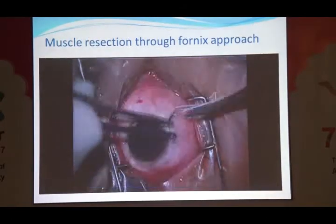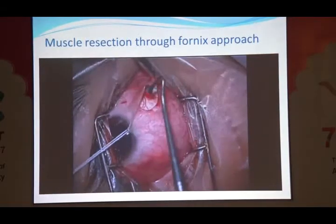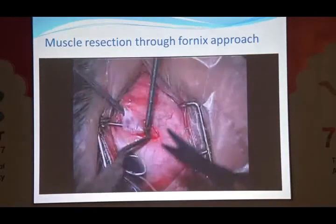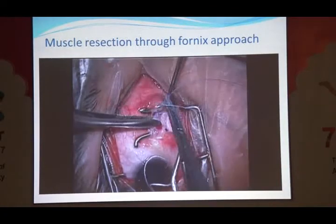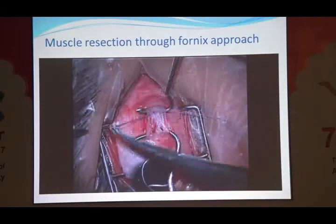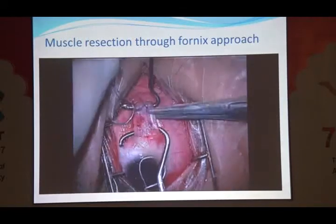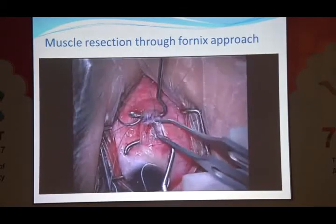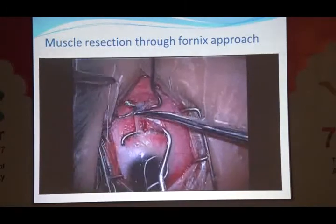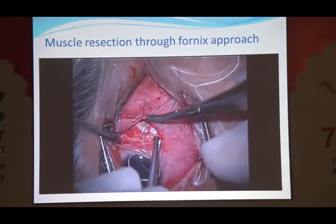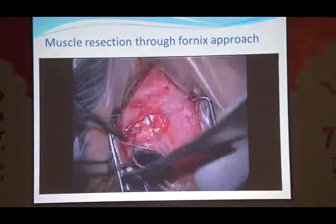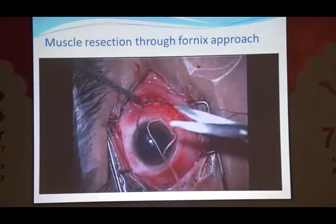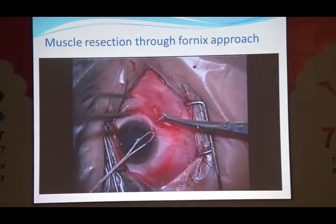This video shows a resection performed through a fornix incision — how to hook the muscle, isolate it with a green hook and Jensen's hook, cutting the intermuscular septum and all its attachments. Then you measure the desired amount of resection. You pass a full thickness bite. Because we are using double-arm sutures, two double-arm sutures are passed at each end. The muscle is then clamped, cauterized and cut. The stump is also cut and the needles are then passed through the original insertion. Taking two double-arm sutures at each end makes it stronger, so chances of lost muscle are less.